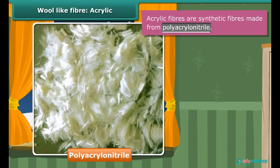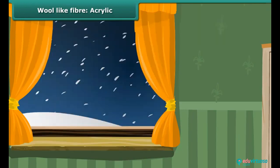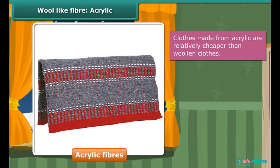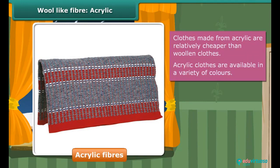Can you think of any advantage of acrylic fiber over wool? The wool obtained from natural resources is quite expensive, whereas clothes made from acrylic are relatively cheaper. Besides this, they are available in a variety of colors. The disadvantages are that acrylic tends to fuzz easily and does not insulate the wearer as well as wool or cashmere.